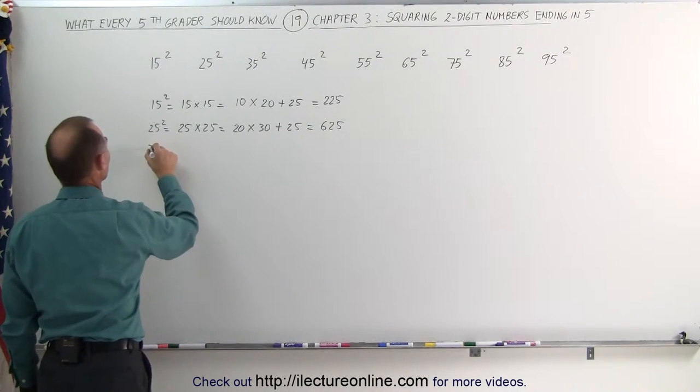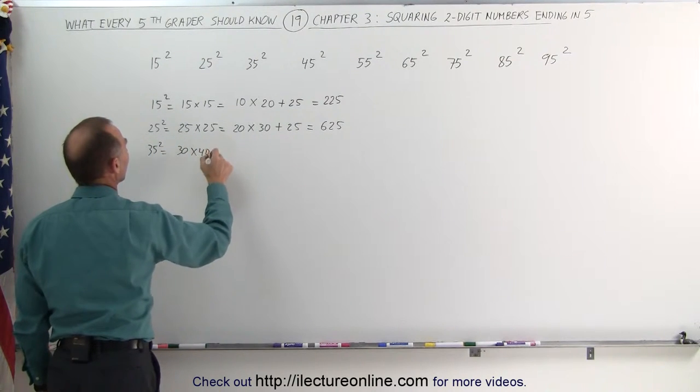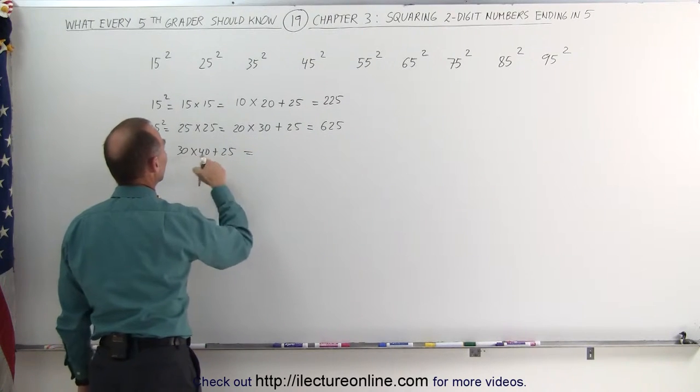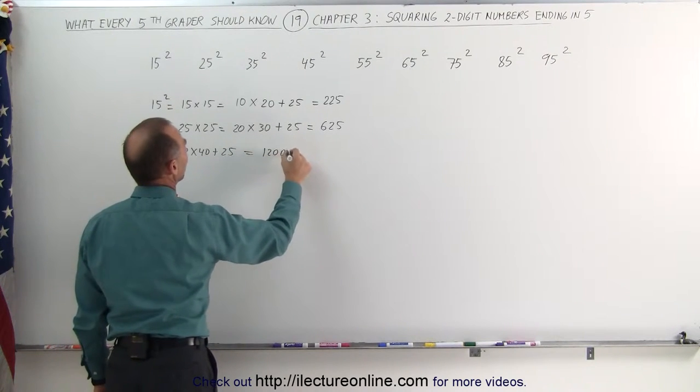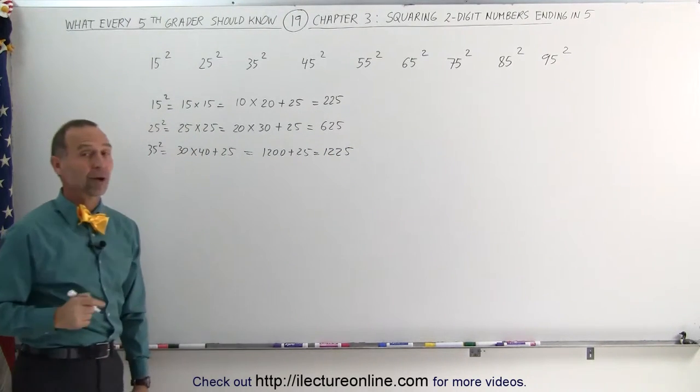Let's try 35 squared. 35 squared is the same as 30 times 40, plus 25. And so that would be equal to 30 times 40, which is 1200, plus 25, which is 1225, and that's 35 squared.